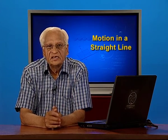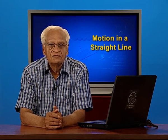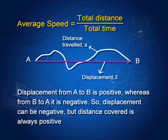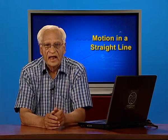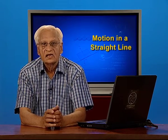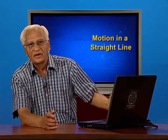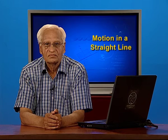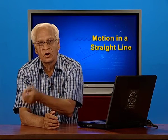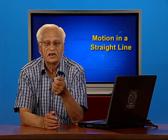Average speed is defined as the total distance covered divided by the total time taken. The distance covered would depend upon the path taken as shown in this diagram. We go from A to B and take a very meandering path. If we measure the length along this path, that would be the distance travelled. Whereas the direct arrow from A to B shows the displacement, and the displacement from A to B is the positive displacement. If we take displacement from B to A, it can be positive as well as negative, whereas the distance covered is always positive.